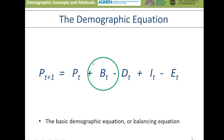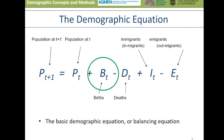Today's course is structured around the demographic equation, which is core to the cohort component methodology. Essentially, if we're interested in the population at time t plus one, we can derive an estimate based on our base population at time t, to which we age on, adding births, taking away deaths, adding in-migrants and taking away out-migrants. This is often known as the basic demographic balancing equation.